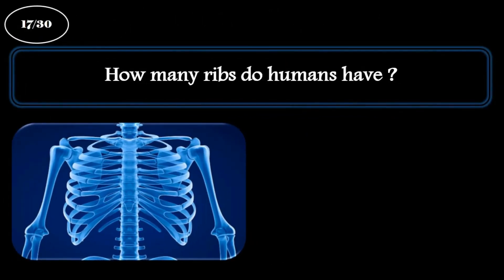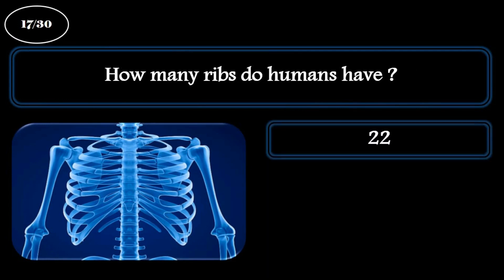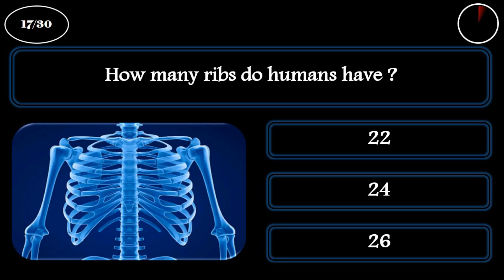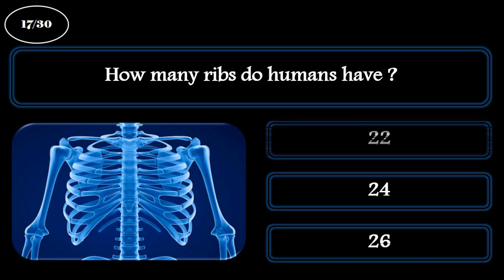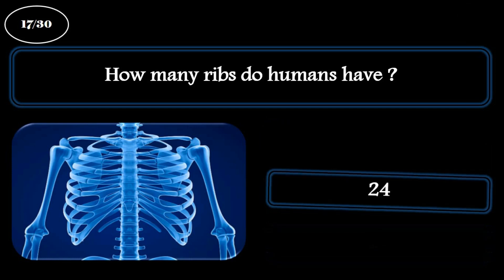Question 17. How many ribs do humans have? A: 22. B: 24. C: 26. The correct answer is 24.